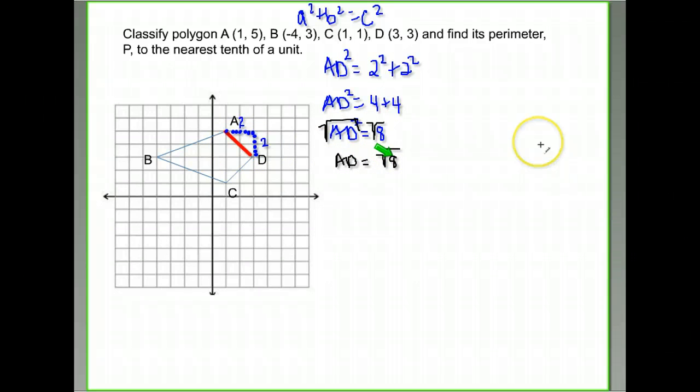And the last thing I do to solve that is take the square root of both sides to get rid of that squared. Notice I come up with exactly the same answer I did when we did the distance formula one. So AD is the square root of eight, which equals, they want to the nearest tenth. If you use your calculator, the square root of eight is about 2.8.